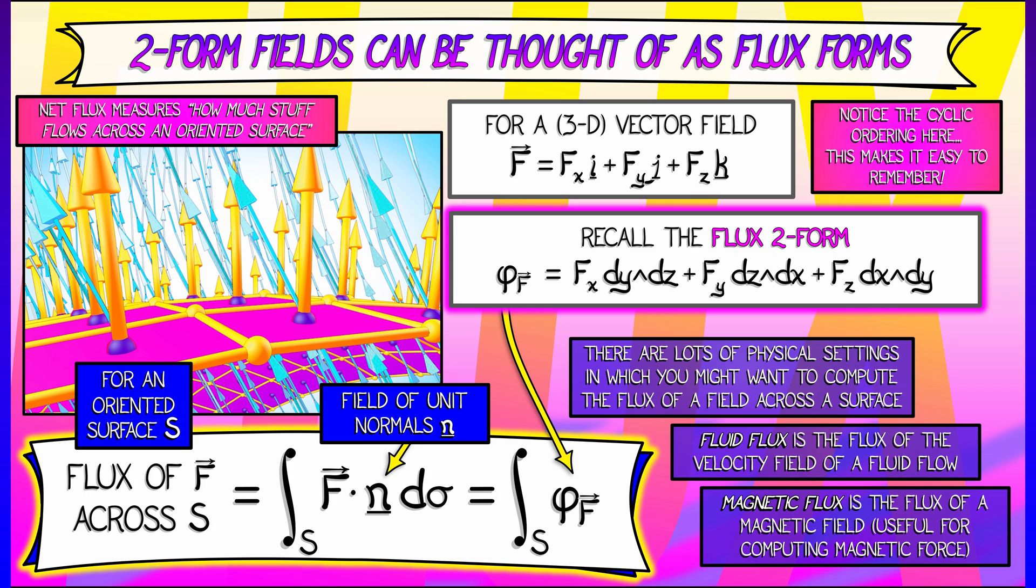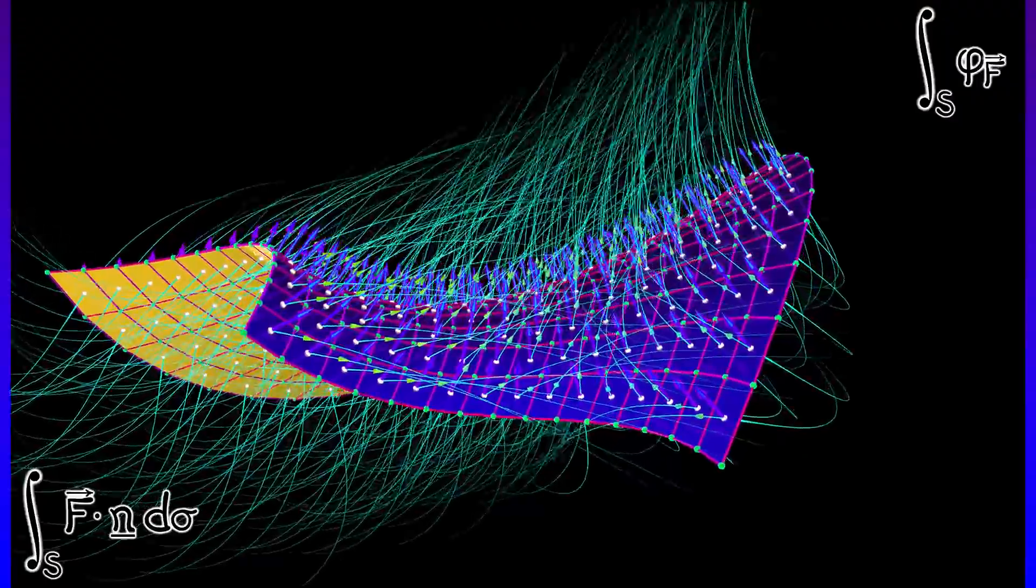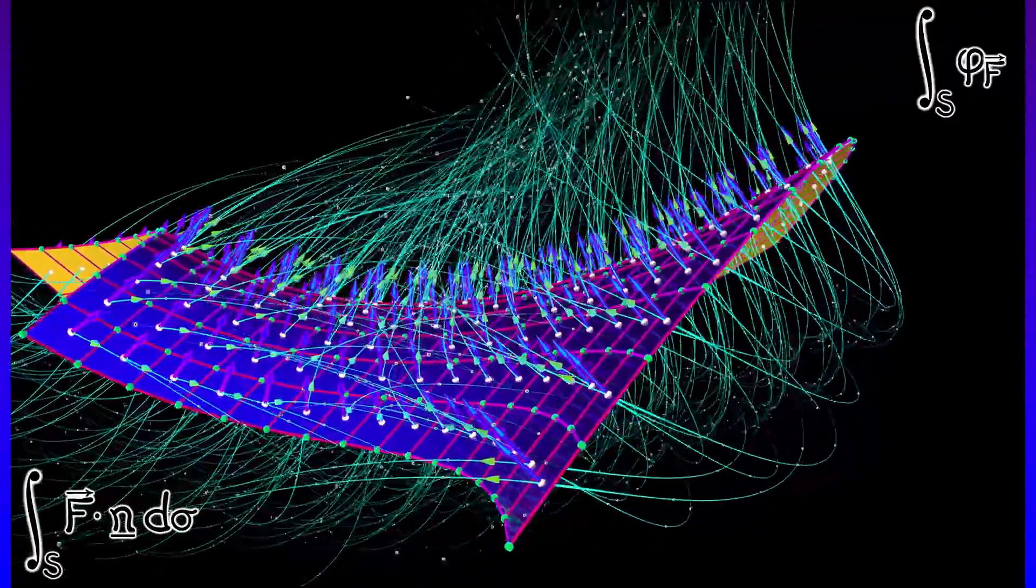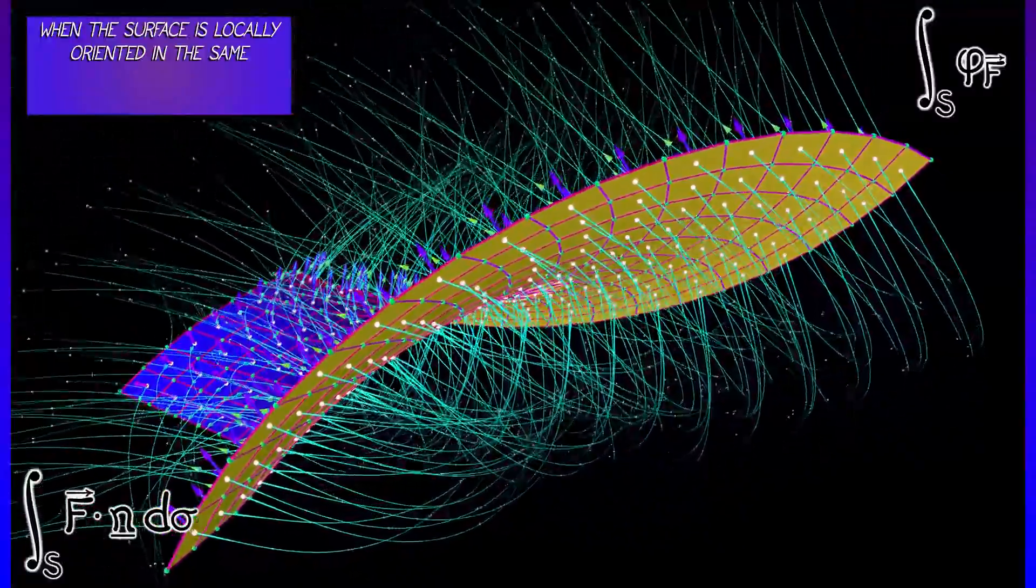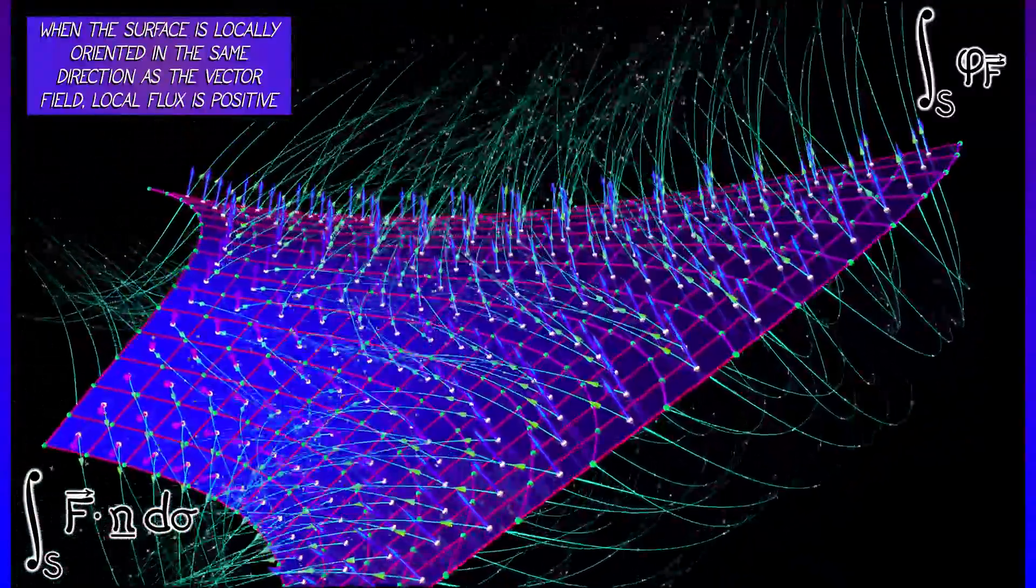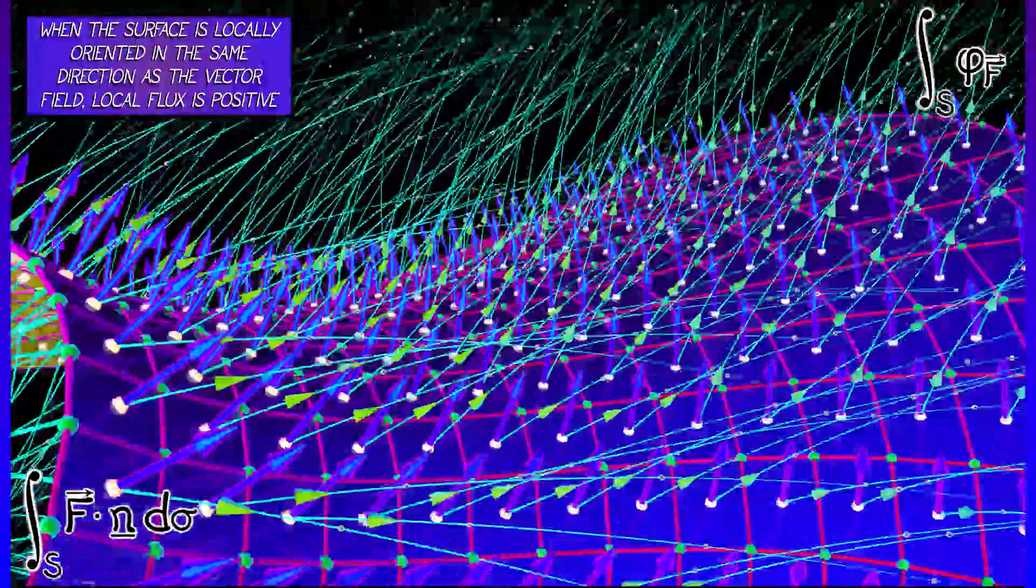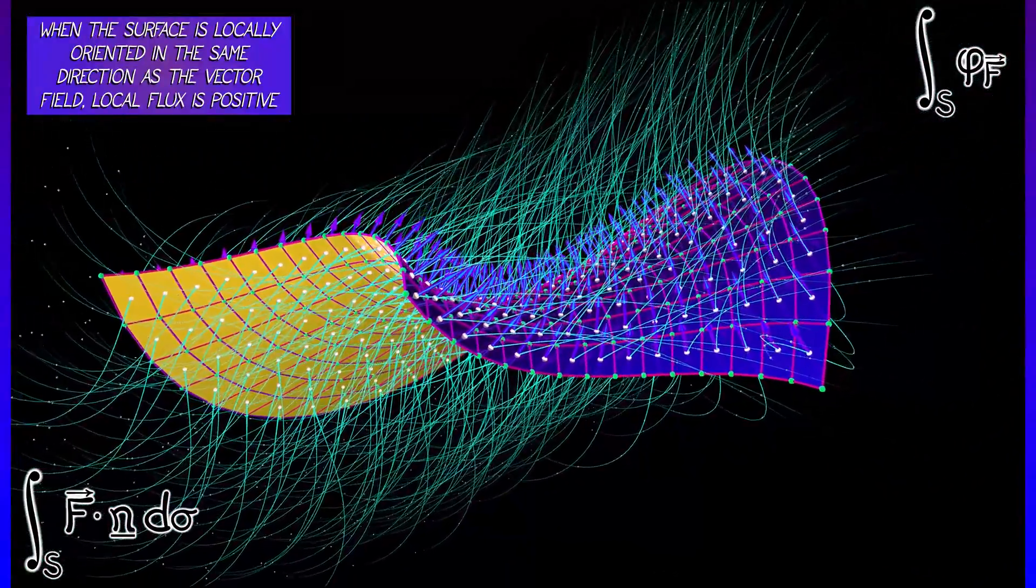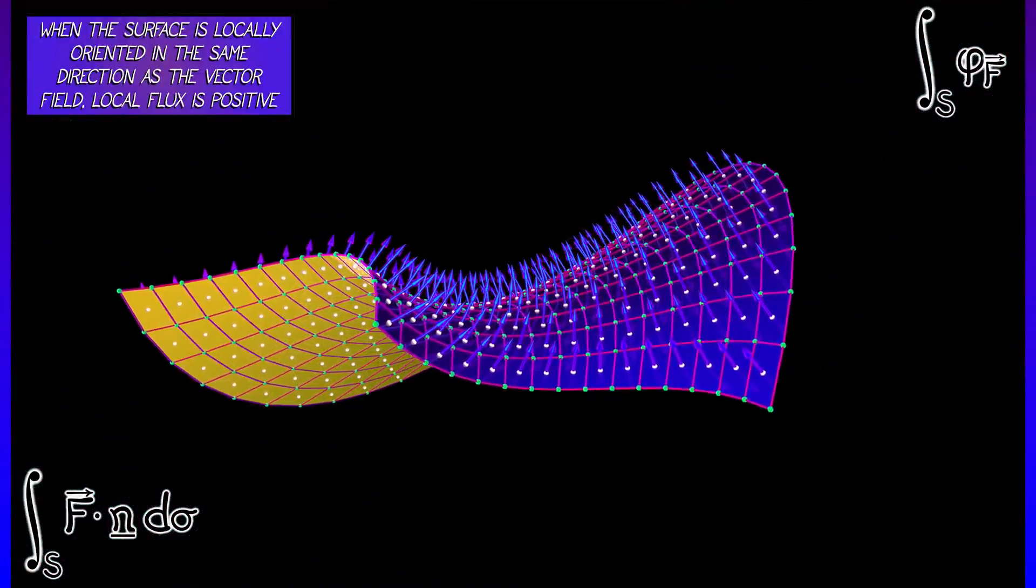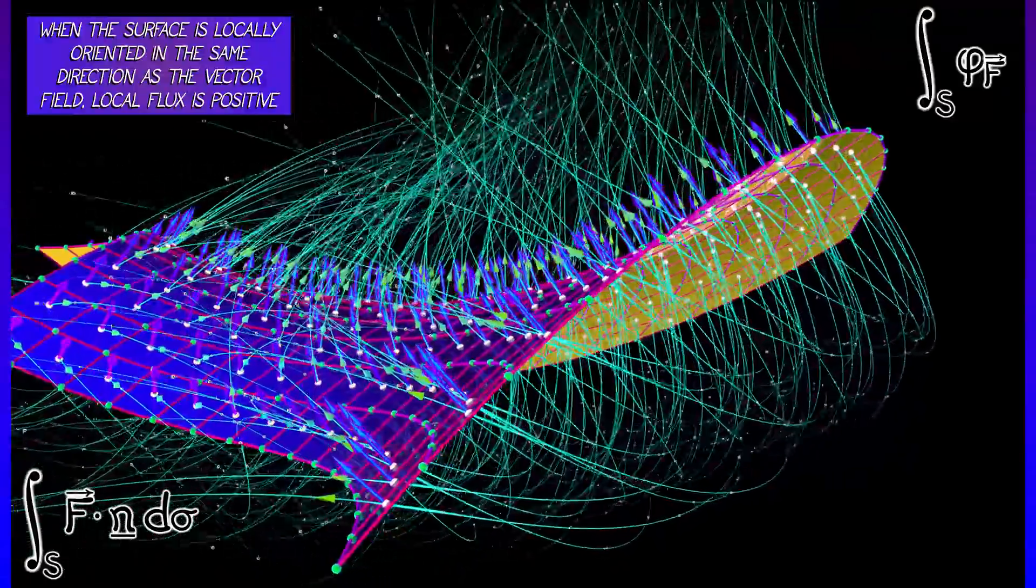There are other physical examples where we care about the flux of a vector field, but it takes a little time to get used to thinking about surfaces and vector fields and flux thereof. There's a lot of stuff going on. If you think about an oriented surface and stuff flowing past it according to a vector field, then at the infinitesimal level, if you zoom in, what you really care about is the dot product. The dot product between that vector field evaluated at a point on the surface and the unit normal vector field there.